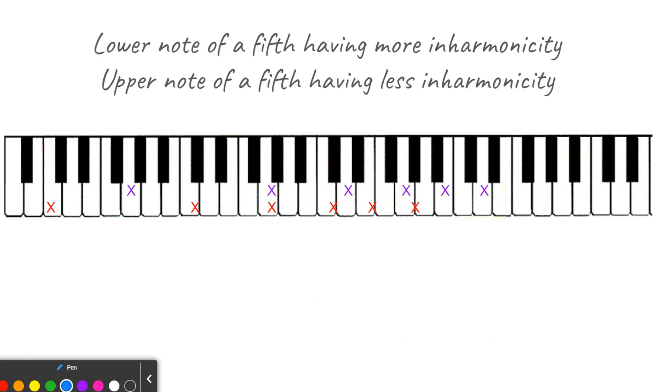If I have a fifth and I tune it pure at the first coincident partial, just like I did before, but I measure the second coincident partial. If that measures narrow, and because of a visual glitch here, I need to make sure everyone understands what I mean. This partial belongs to the lower note of C. This partial belongs to the upper note of G. Since the lower note partial is sharp, it means my fifth is narrow.